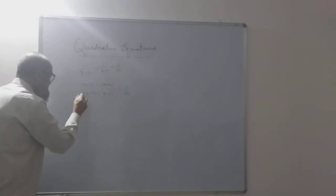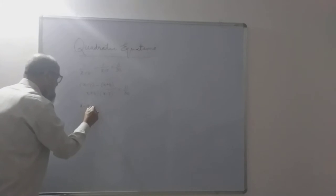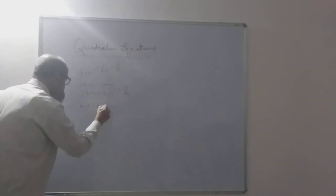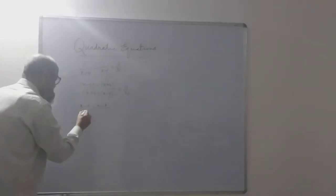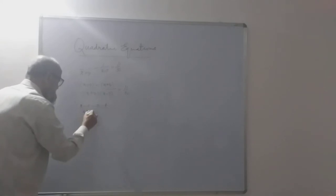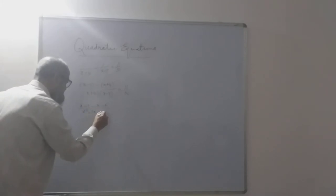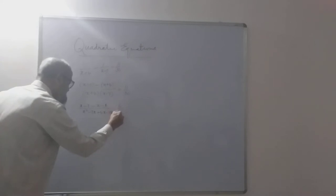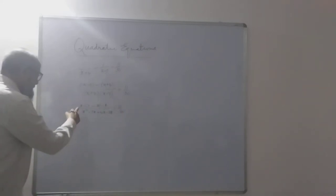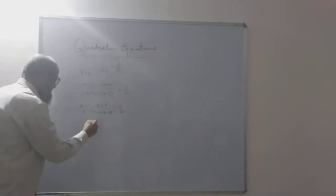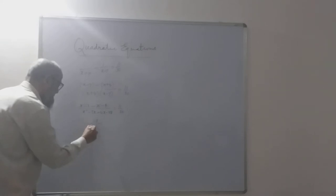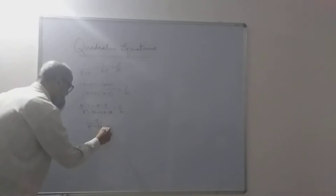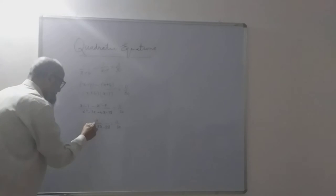Taking the LCM, the numerator becomes (x minus 7) minus (x plus 4), and the denominator is x squared minus 7x plus 4x minus 28. The x terms in the numerator cancel: minus 7 minus 4 gives minus 11. The denominator simplifies to x squared minus 3x minus 28, giving minus 11 over (x squared minus 3x minus 28) equal to 11 by 30.